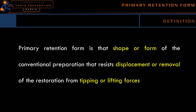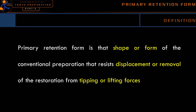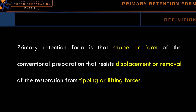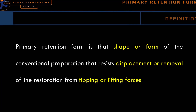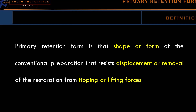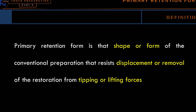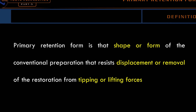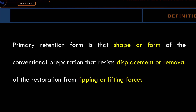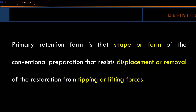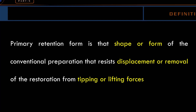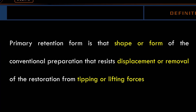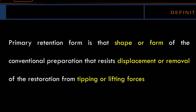A primary retention form is defined as the shape or form of the conventional preparation that resists displacement or removal of the restoration from tipping or lifting forces.